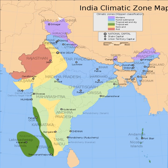Simultaneously, the Thar Desert plays a role in attracting moisture-laden southwest summer monsoon winds that, between June and October, provide the majority of India's rainfall. Four major climatic groupings predominate, into which fall seven climatic zones that, as designated by experts, are defined on the basis of such traits as temperature and precipitation. Groupings are assigned codes according to the Köppen climate classification system.